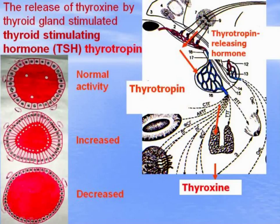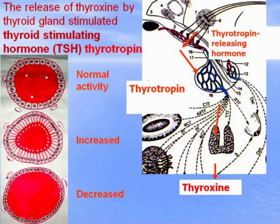The release of thyroxine into the blood is stimulated by thyroid-stimulating hormone of the anterior lobe of the hypophysis. But before that, thyroxine-releasing hormone of the neurohypophysis must appear, which stimulates the release of thyrotropic hormone from the anterior lobe of the hypophysis. This is a normal follicle of the thyroid gland in the normal state, lined by cuboidal epithelium.